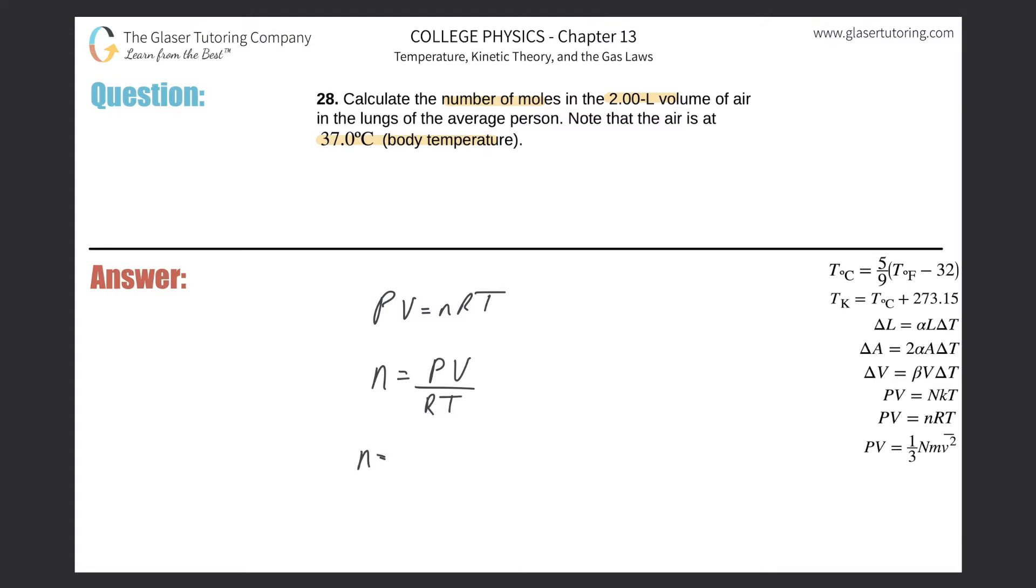Now all I need to do is plug in the values. The first thing is, what's the pressure? They didn't tell us the pressure here, but the absolute pressure of the gas in your lungs is equivalent to atmospheric pressure, right? So we actually know what it is. In this problem it's going to be 1.013 times 10 to the 5th Pascal.